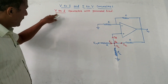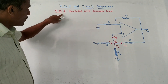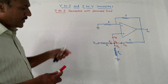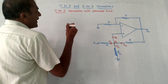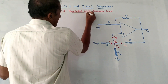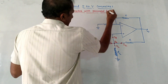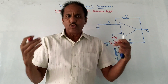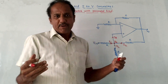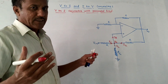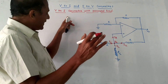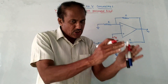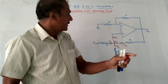First part: V2I, that is voltage to current converter with grounded load. We are going to use an operational amplifier for this conversion. As the name indicates, we need to convert voltage into current.